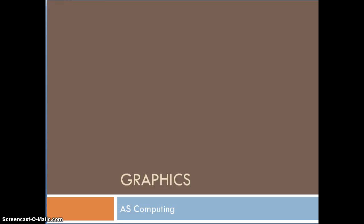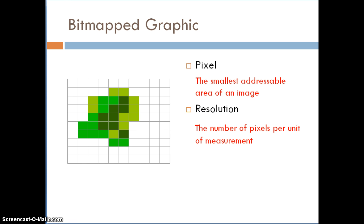This is a short video looking at graphics and just a few of the definitions associated with graphics to get started before the lesson. What we're going to start with is what's called bitmapped graphics. Bitmapped graphics are made up of a series of zeros and ones that represent that graphical image.